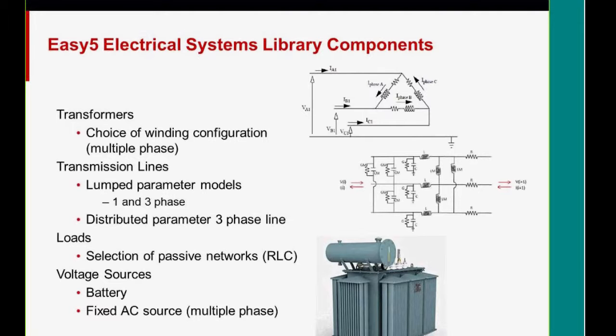Then there's a selection of types of transformers and a number of ways to model transmission lines. You can either use lump parameter models or a three-phase distributed parameter line. So you can get whatever accuracy, trade it off with simulation speed that you want. And there's a number of passive components for loads and some voltage sources, such as a battery, and then a fixed AC source if you don't want to go through modeling generation or battery.